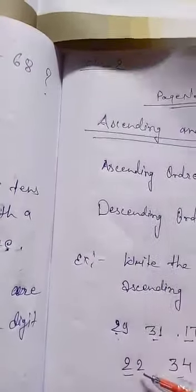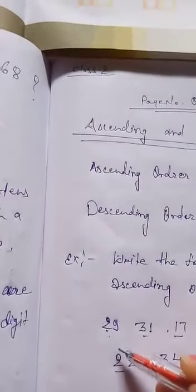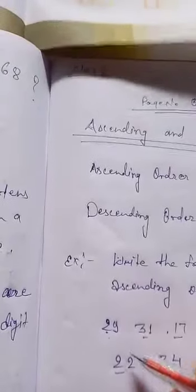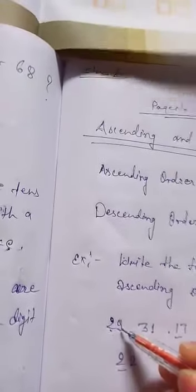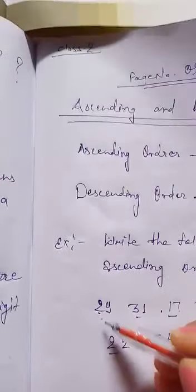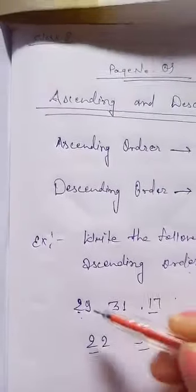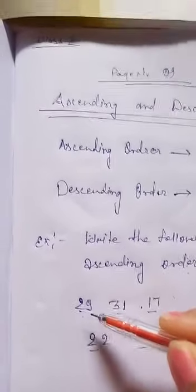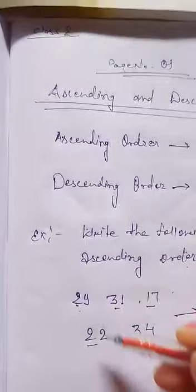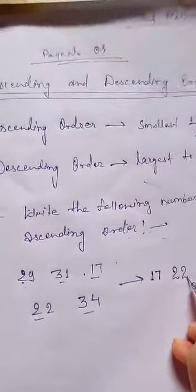Here, in 29 and 22, two digits are smaller than 31 and 34. We compare them. In both numbers, the tens place is the same. That's why we look at the ones place: 9 and 2. Since 2 is smaller than 9, we write 22 first, then 29.